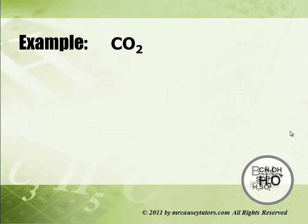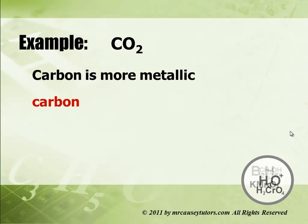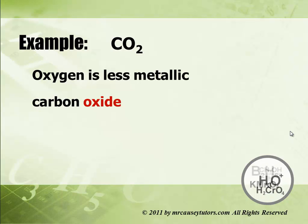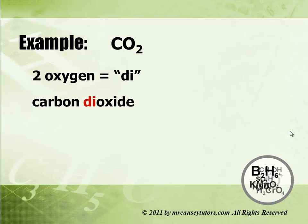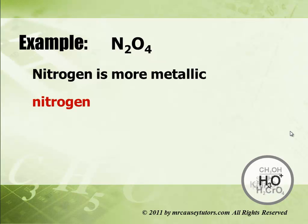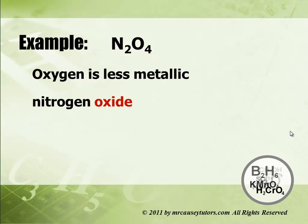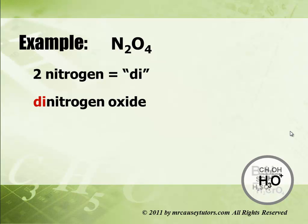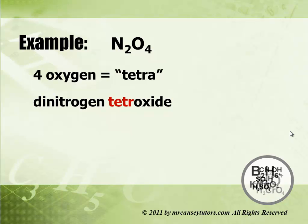As you go left to right on the periodic table, compounds get less metallic. Carbon is more metallic so we put carbon first; oxygen is less metallic so we have oxide — we took the root OX and added -IDE to get carbon oxide. But there are two of them, so it's carbon dioxide. Next example: nitrogen is more metallic, oxygen is less metallic. There are two nitrogens — dinitrogen — and four oxygens — tetraoxide. Note we drop the A whenever an A and an O end up next to each other, so it's dinitrogen tetroxide.